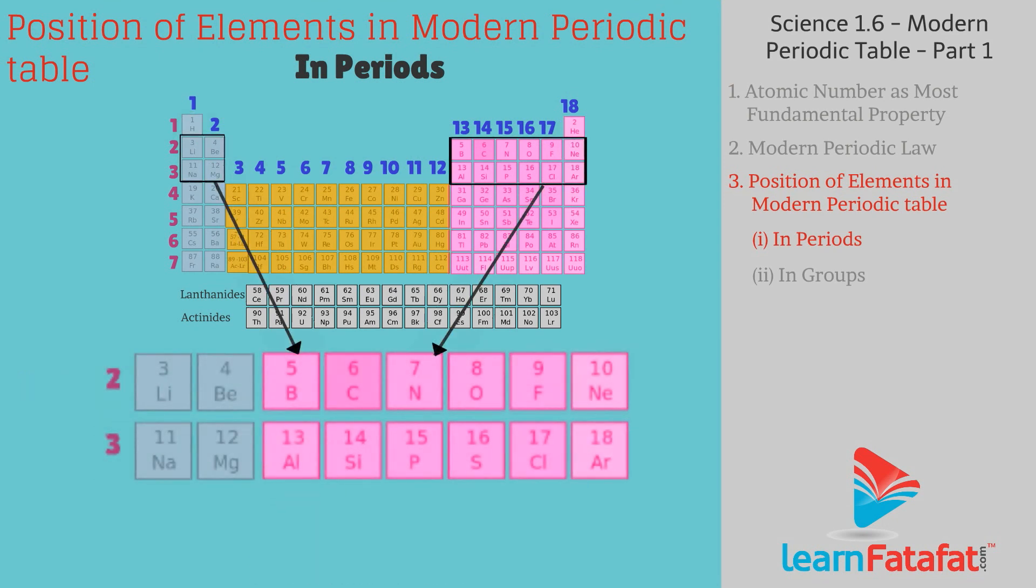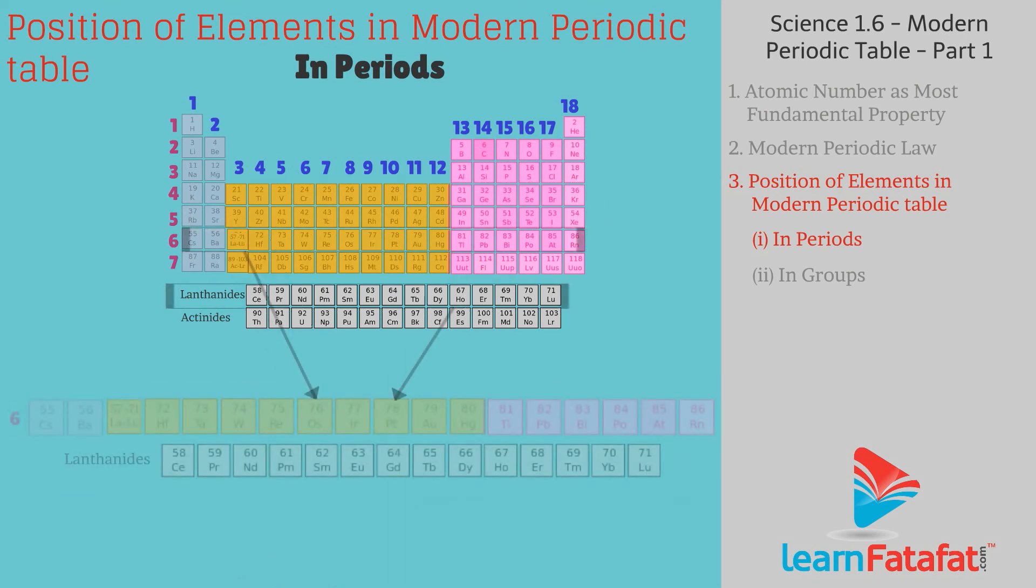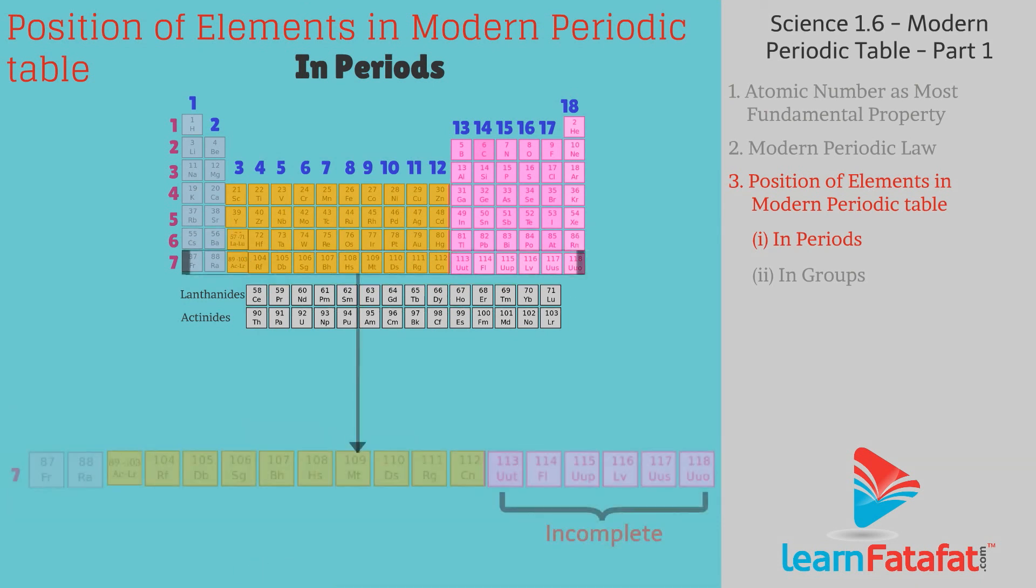The second and third period contains 8 elements, hence these are called short periods. Fourth and fifth period has 18 elements, so called as long periods. Sixth period consists of 32 elements and called as the longest period. The seventh period is incomplete.